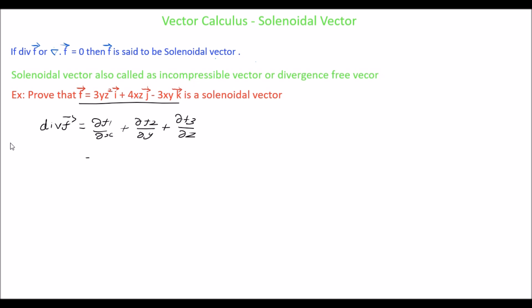Here, f₁ is the coefficient of i vector which is 3yz², f₂ is the coefficient of j vector which is 4xz, and f₃ is the coefficient of k vector which is -3xy.